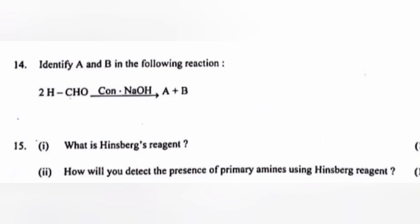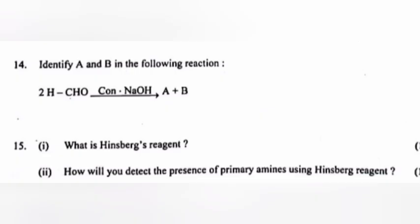Question 15 Part 1: What is Hinsberg's reagent? Answer: Benzene sulfonyl chloride, C₆H₅SO₂Cl. Part 2: How will you detect the presence of primary amines using Hinsberg's reagent? Answer: Primary amines react with Hinsberg's reagent to form alkyl benzene sulfonamide which is soluble in alkali.